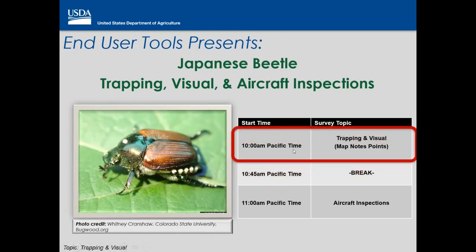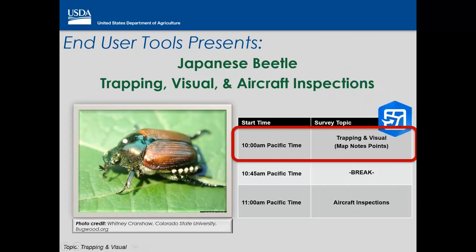We'll start right on time. I've got Pacific time because that's what most of you are on; I'm in mountain time, so it's 11 my time. We'll start with trapping and visual — this year it's in one map, whereas last year it was in two maps. Trapping and visual is in ArcGIS Field Maps, while aircraft inspections is in Survey123.